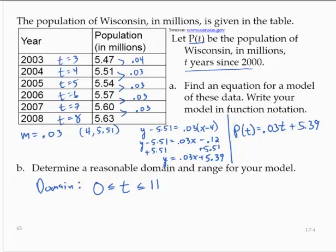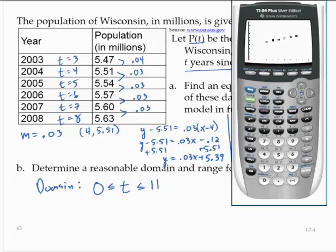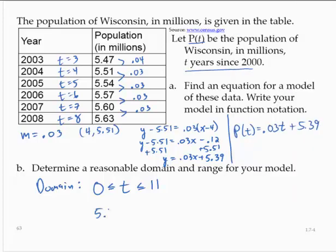And then for the range, let's do as we did before. Let's put in our y equals equation here, which would be 0.03x plus 5.39, and let's use our table at those end points. t equals 0, 5.39; t equals 11, 5.72. So I would say that 5.39 is less than or equal to P(t) is less than or equal to 5.72. That would be the range.